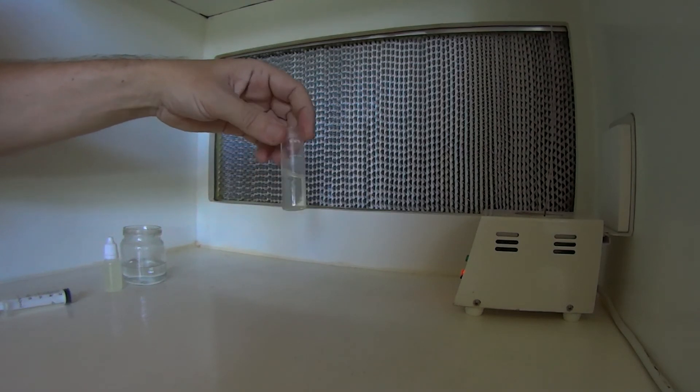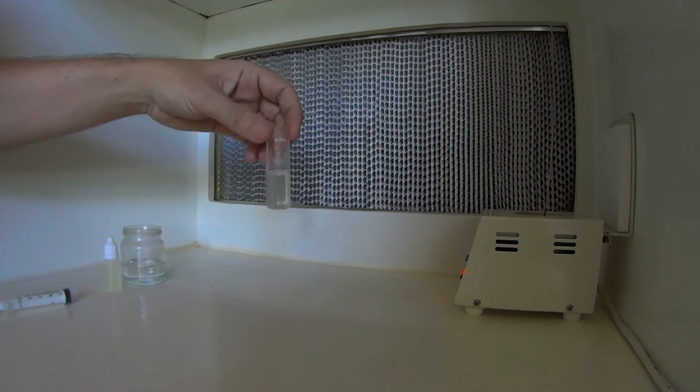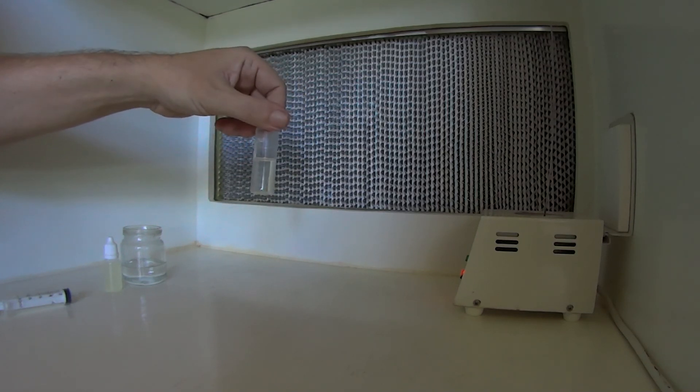Now what we simply do with this is add it to our required volume of water. So measure out whatever water you need to mix it with to get your correct parts per million, and add it. And it's pretty simple.